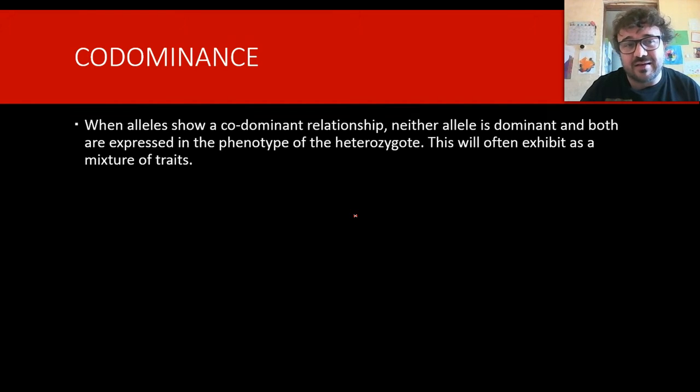Then we can move on to something called codominance. We're going to look at two examples of codominance here. So, when a codominant relationship happens, neither is, again, neither is dominant over the other. But instead of getting an intermediate trait, you get a mixture of traits, which is pretty cool.